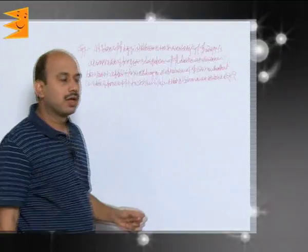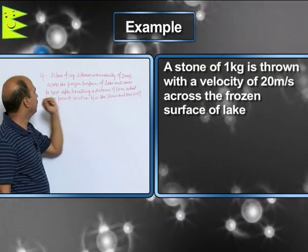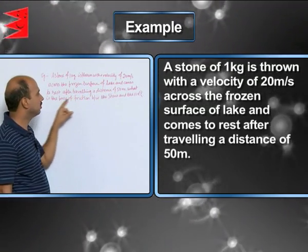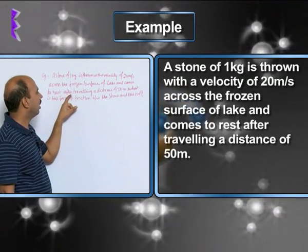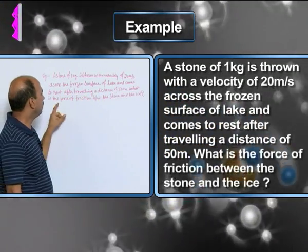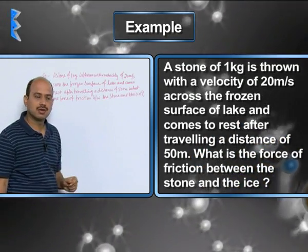Now, see in this example, a stone of mass 1 kg is thrown with a velocity of 20 meter per second across the frozen surface of lake and comes to rest after travelling a distance of 50 meter.